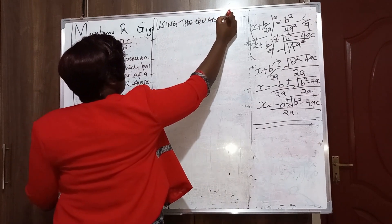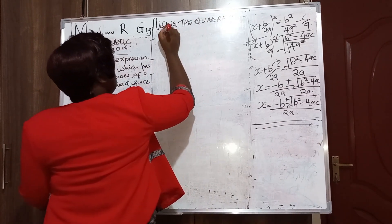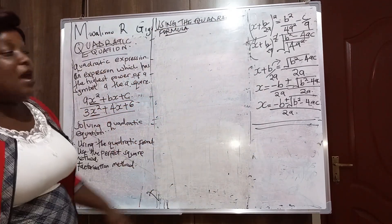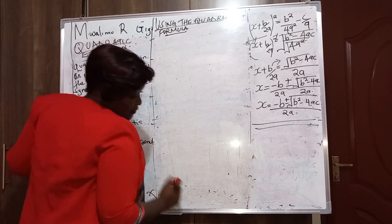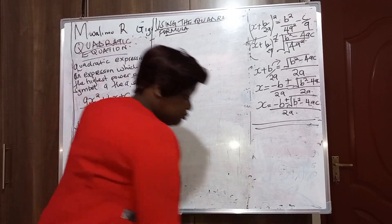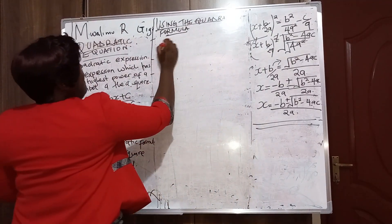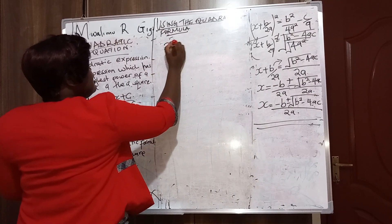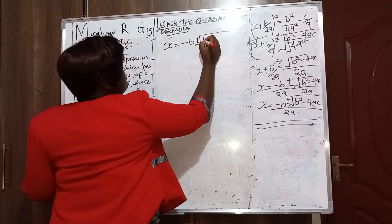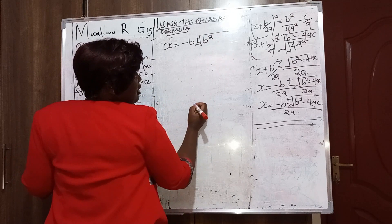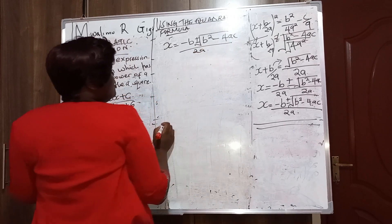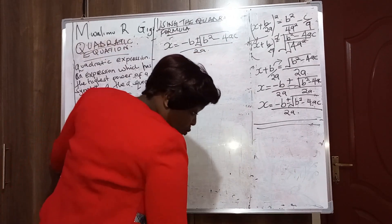So the quadratic formula is: x equals negative b plus or minus the square root of b squared minus 4ac, all divided by 2a.